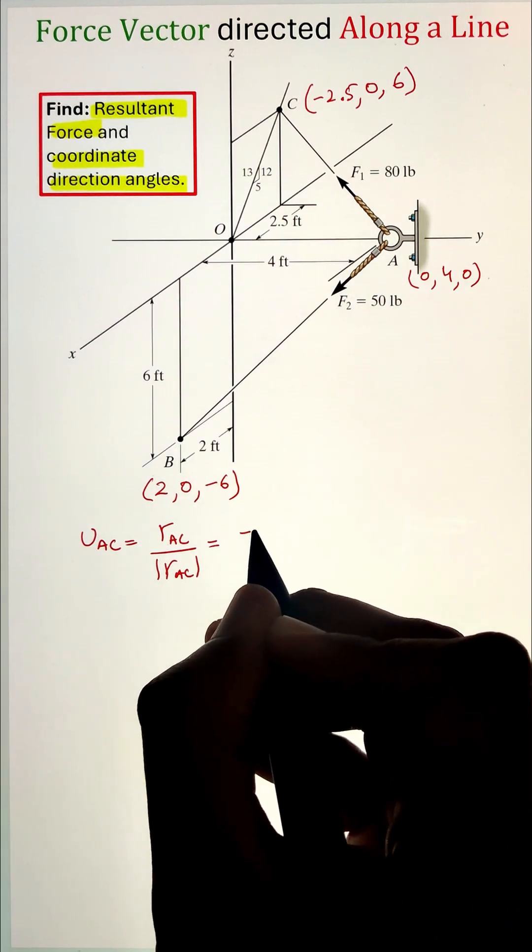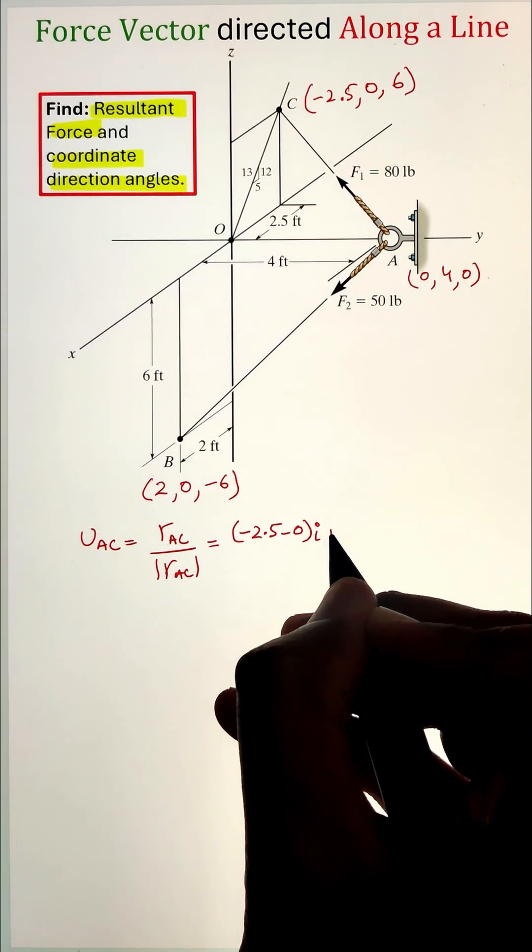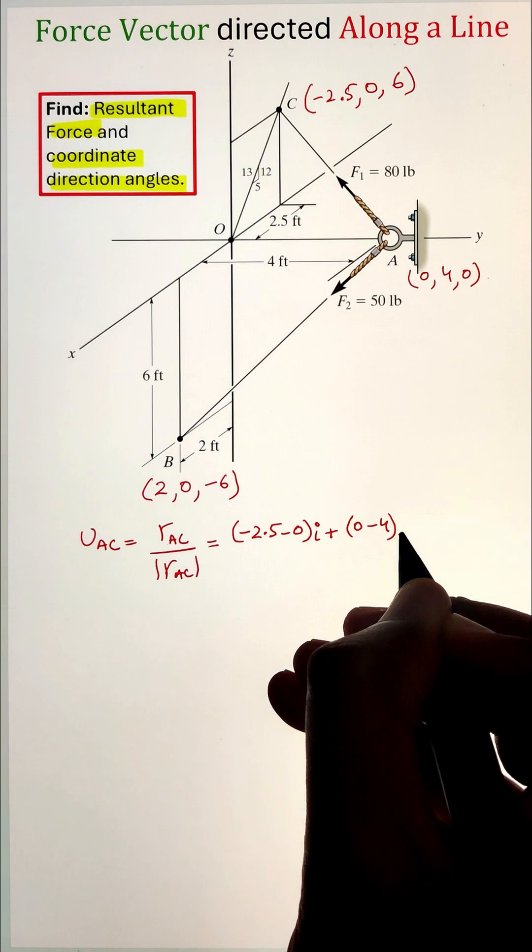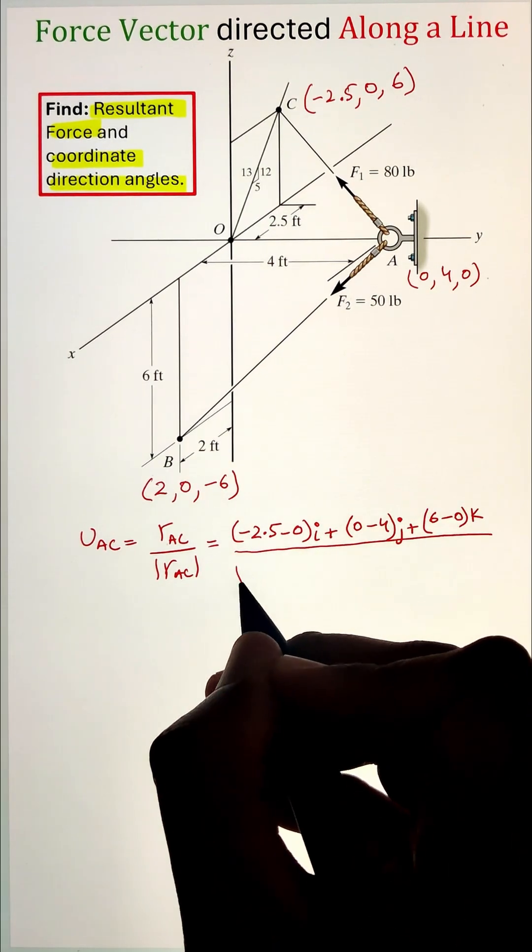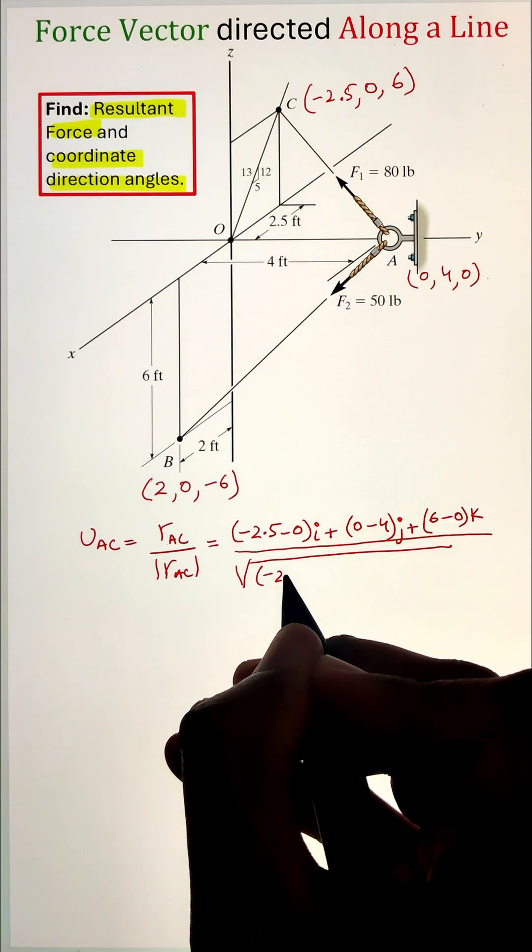The vertical distance can be calculated from the right-angle triangle of 13, 12, and 5. Since 2.5 is half of 5, using the same ratio, the vertical distance will be half of 12, that will be 6 in this case.